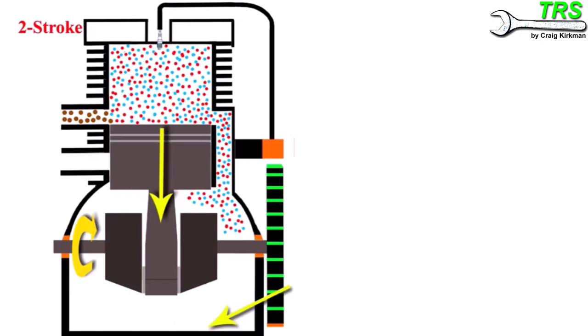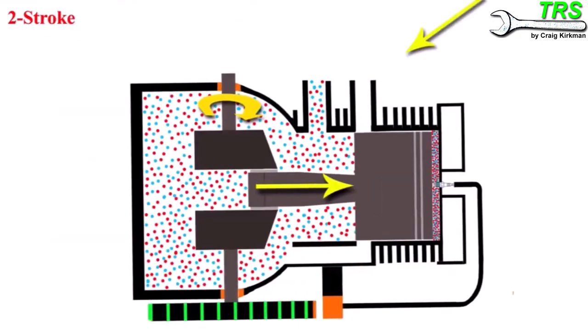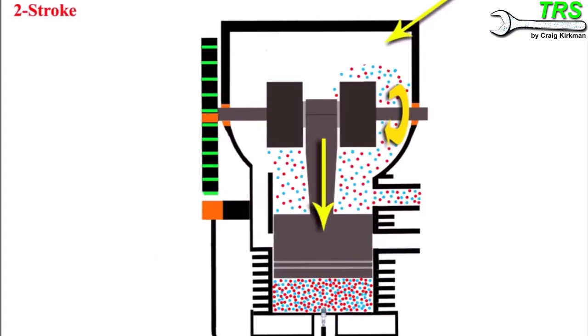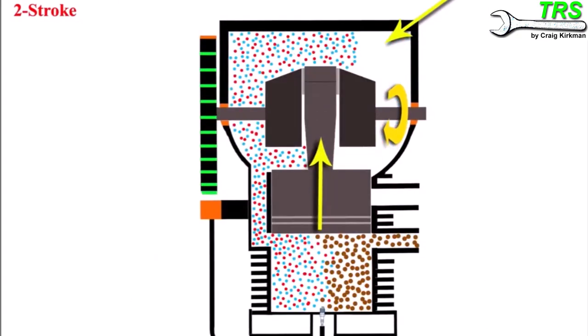But the moral of the story is there's no oil down here in the crankcase like there is in a four-stroke. And so we can use this engine in any position like this, and that includes being able to run just as efficiently upside down.